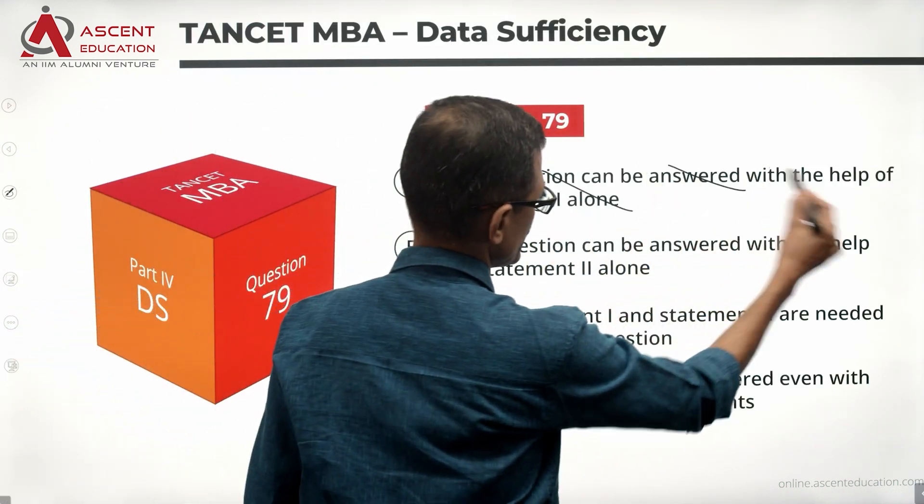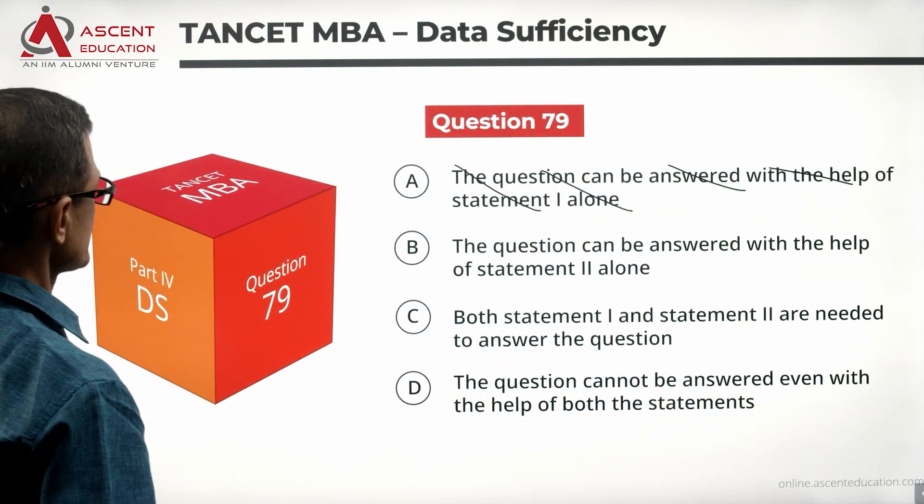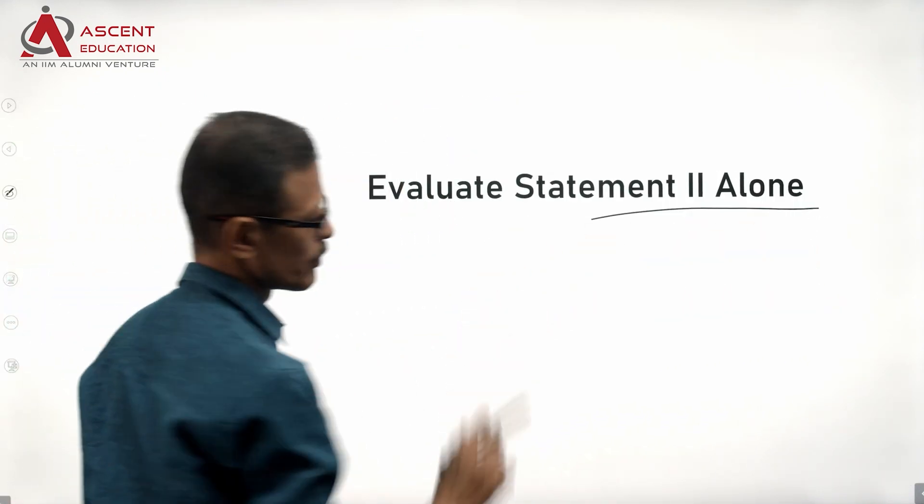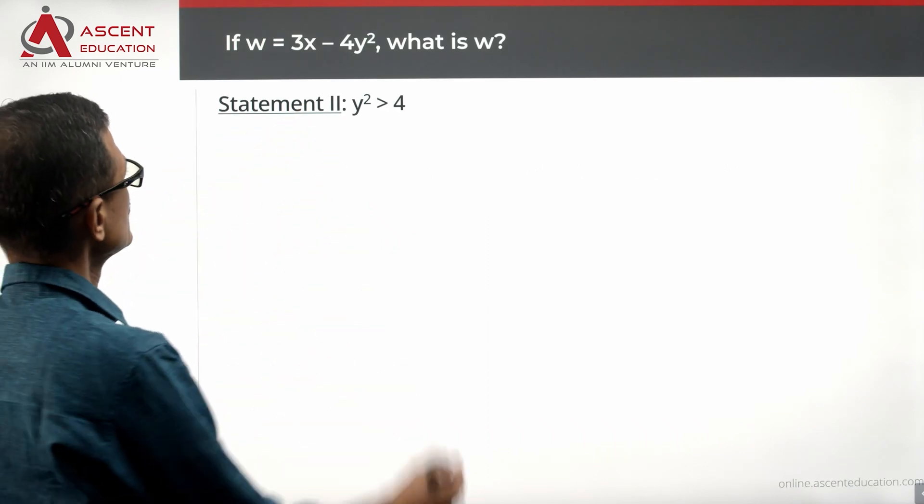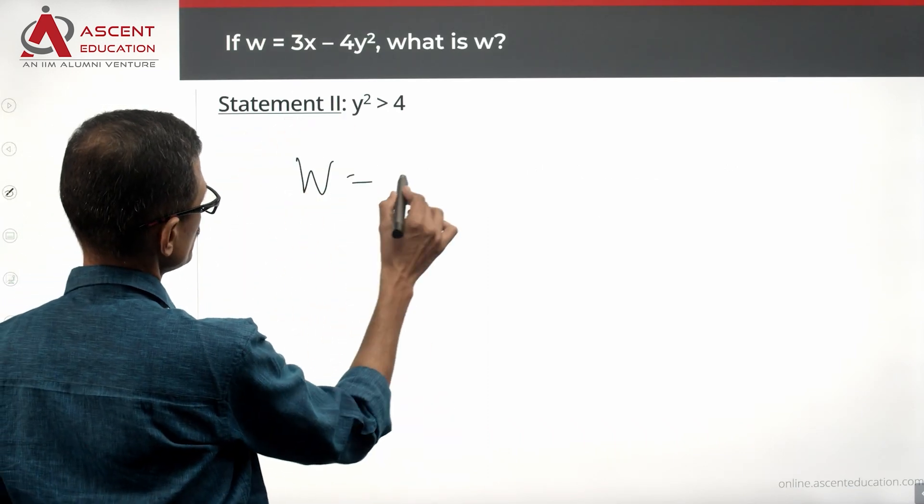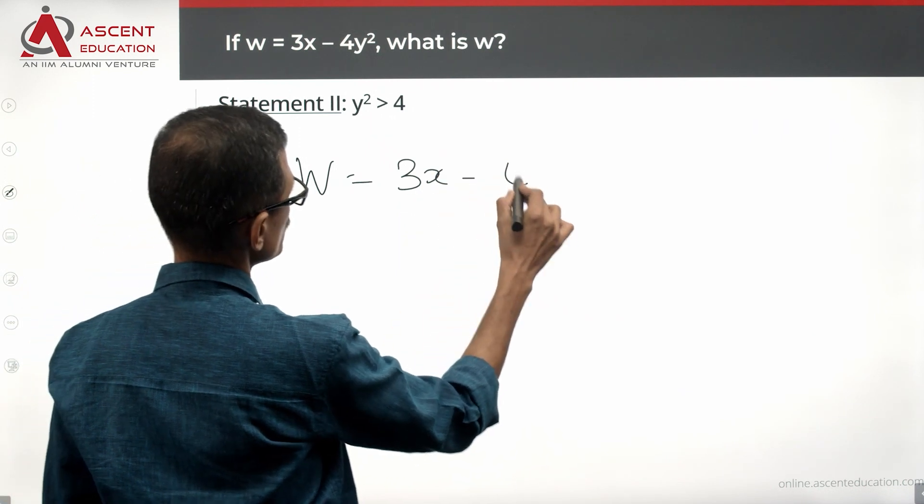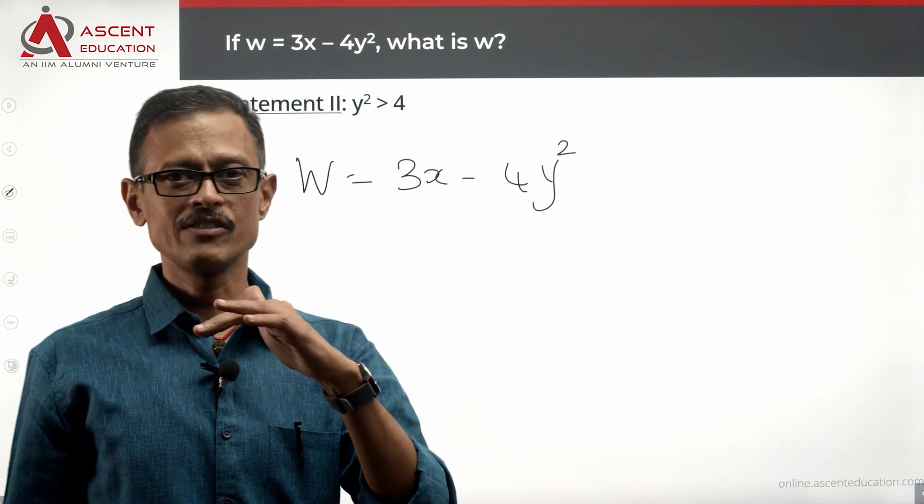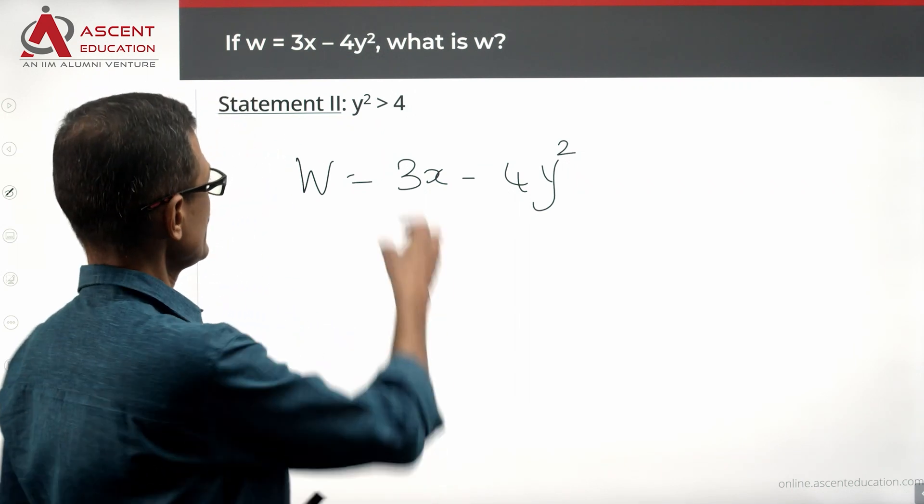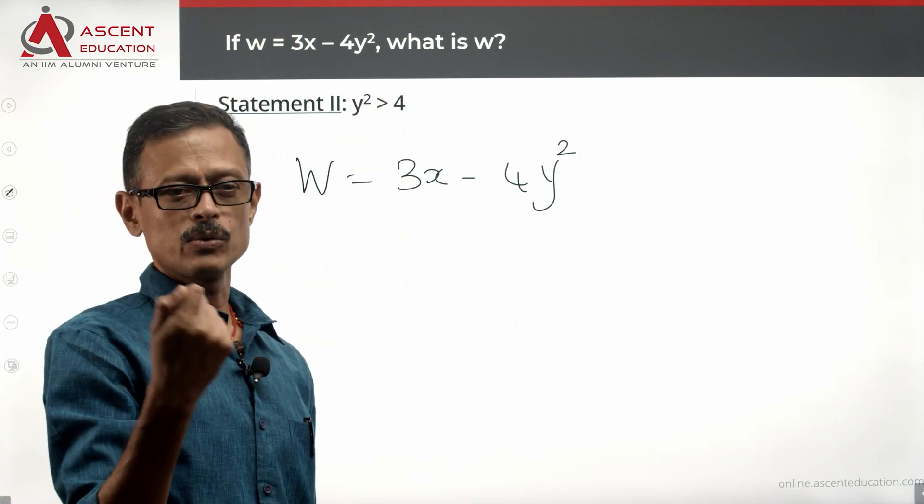Quickly eliminate answer option A and move on to statement 2 alone. What does statement 2 tell us? It says y² > 4. For w = 3x - 4y², we don't know what x is. They have not given us a unique value for y². Y² is greater than 4,